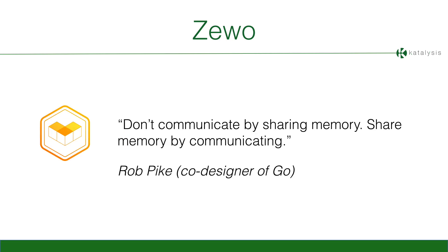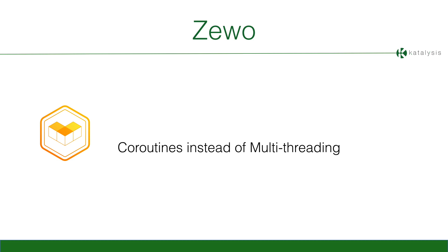The main idea behind Zevo is that they use coroutines rather than multithreading. Other frameworks like Vapor are now moving in that direction too. The main idea was: you shouldn't communicate by sharing memory — multithreading — but rather share memory by communicating. That's what Rob Pike, co-designer of Go, said. If you know a little Go, there is heavy use of coroutines built deep in the language. So Zevo uses coroutines as a sort of multithreading.